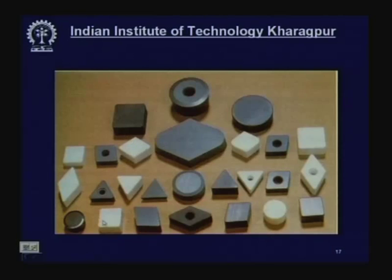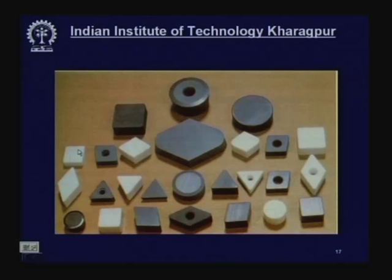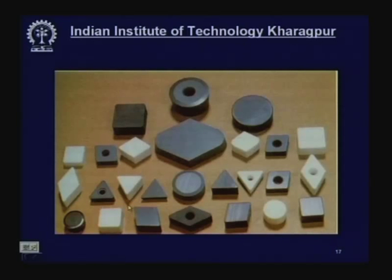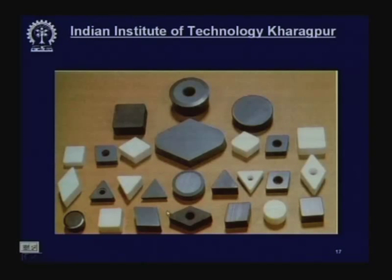Typical ceramic tool inserts come in white, black, and sometimes pink colors, in shapes including square, rhombus, triangular, hollow, solid, circular solid, and hollow circular. Unlike carbide tools, ceramic tool inserts have no patterns — these are difficult to produce, and producing them would reduce tool strength because ceramics are more brittle than carbides and high speed steel.